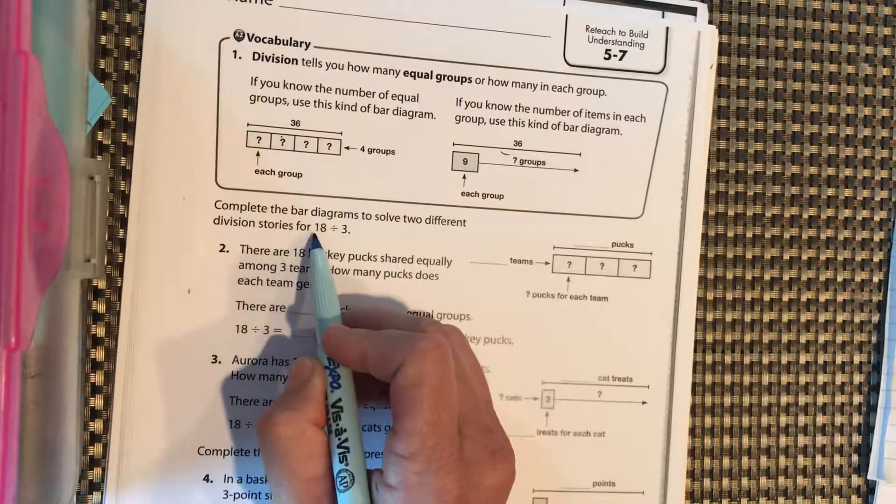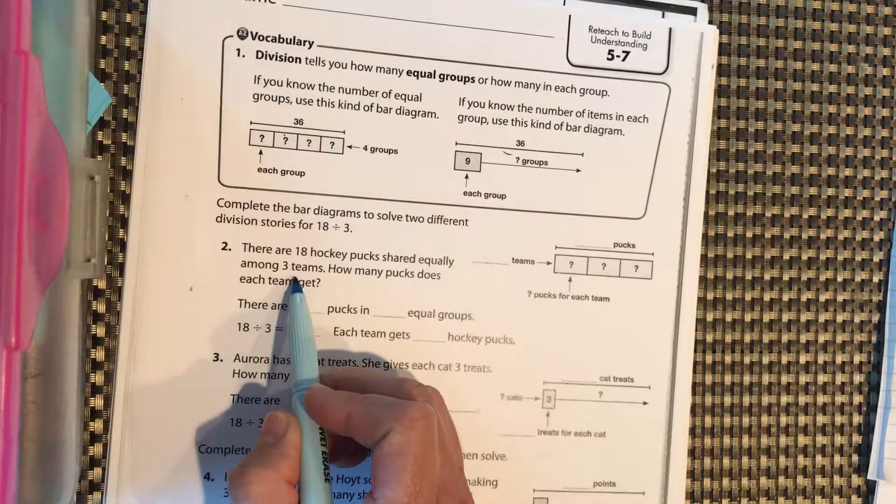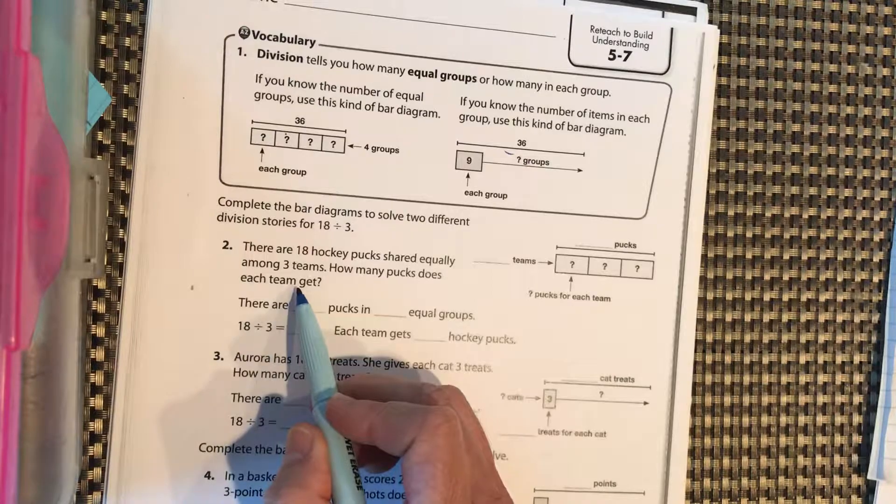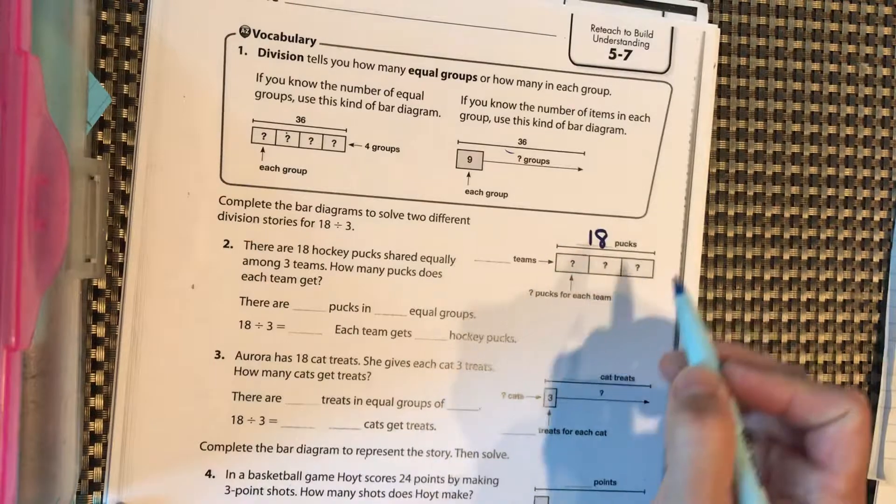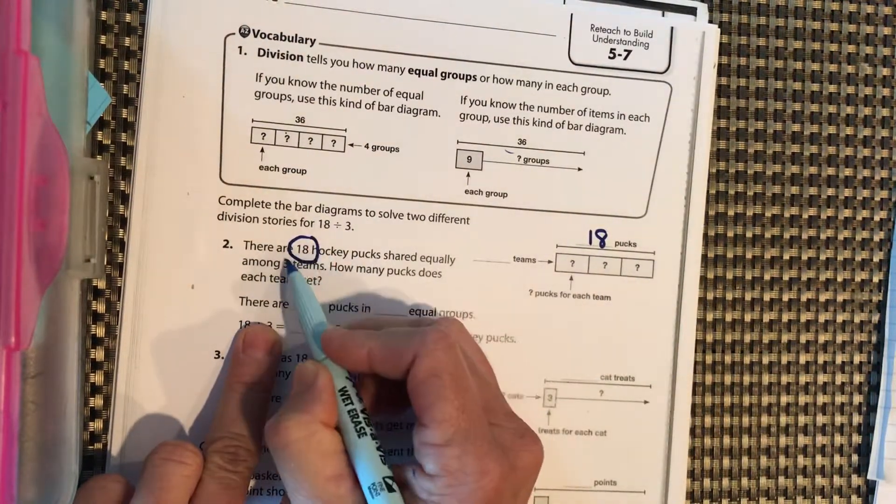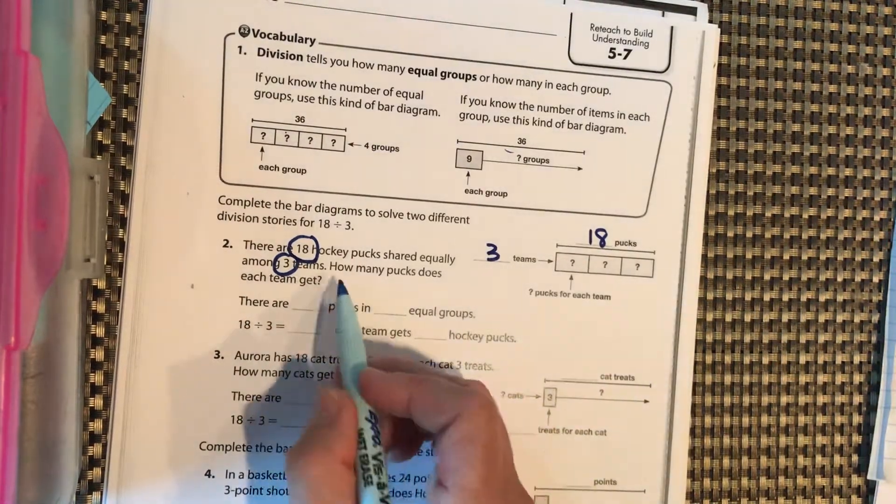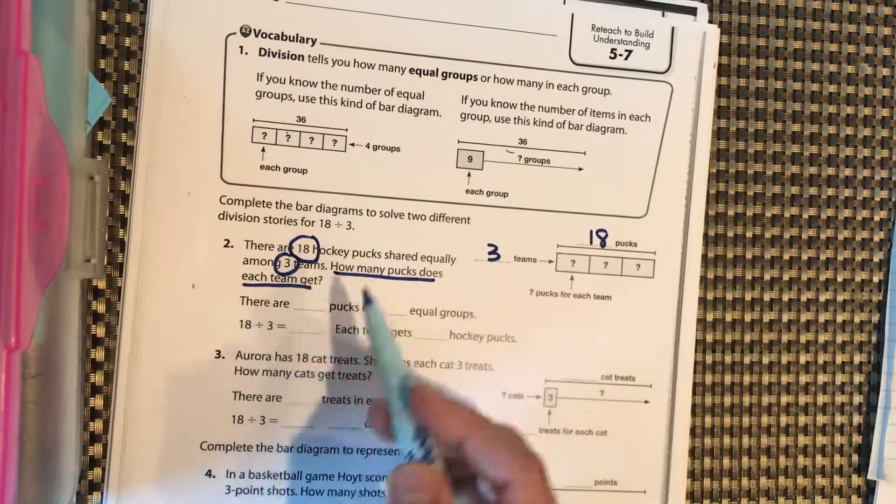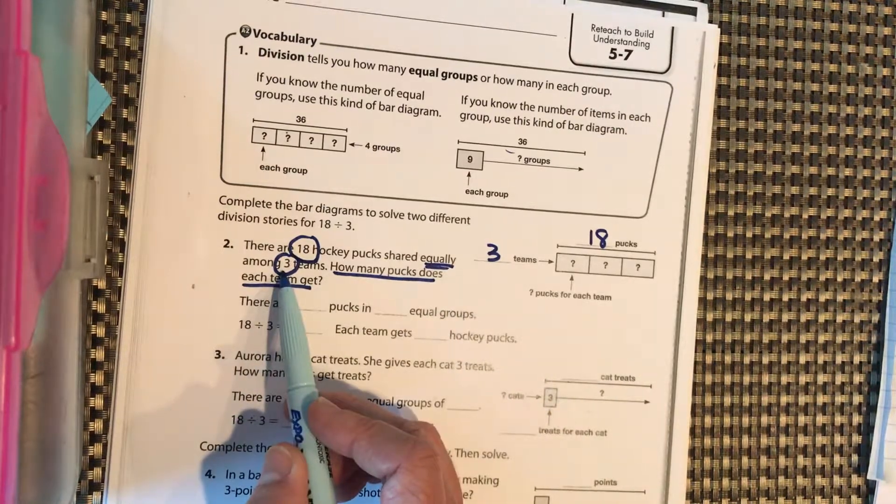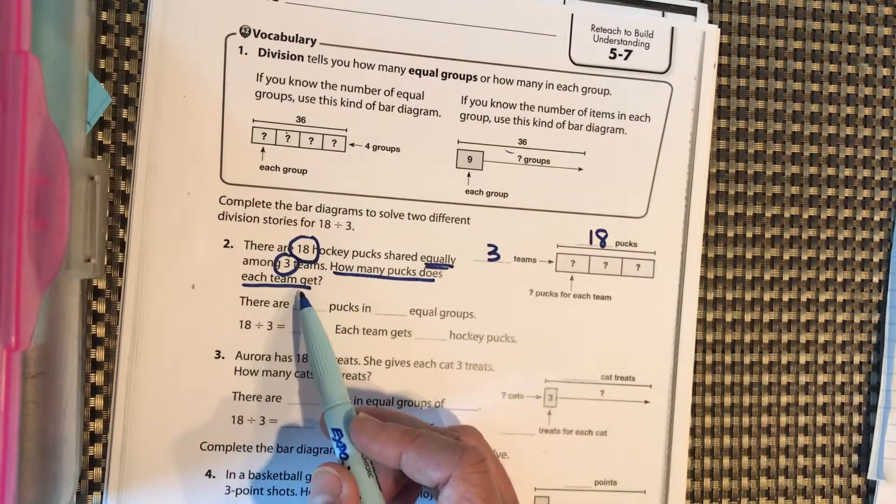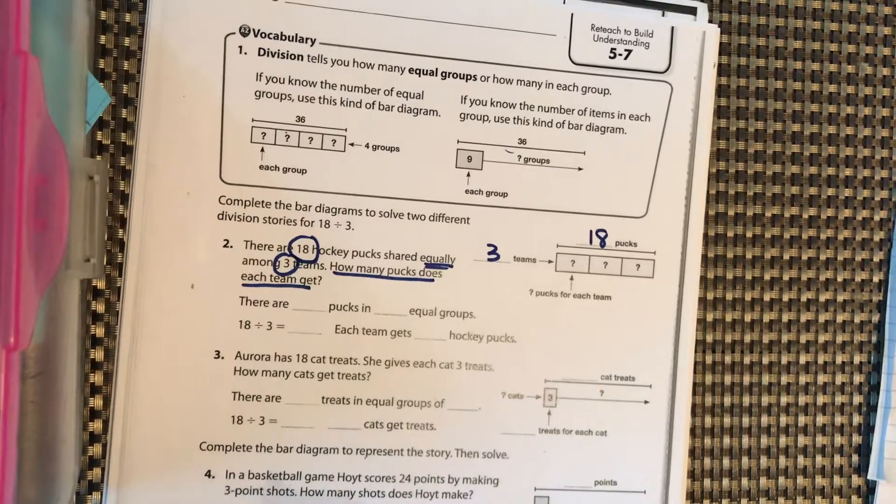Complete the bar diagram to solve two different stories for 18 divided by 3. There are 18 hockey pucks shared equally among three teams. How many pucks does each team get? So we have a total of 18 pucks, and it's being shared equally among three teams. This is a very good division word problem. We want to know how many pucks does each team get. We have a total number. We're going to divide it equally, which means equal group, among three teams. And we know that the number of pucks that each team is going to get is less than 18. That means all the criteria and definitions for a good division word problem.